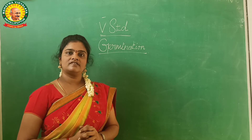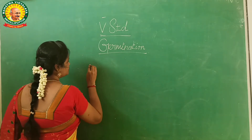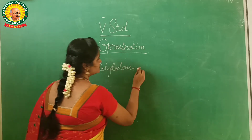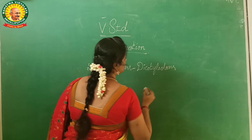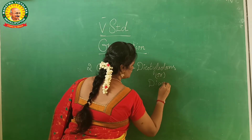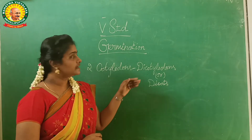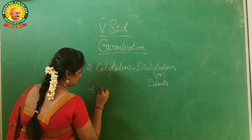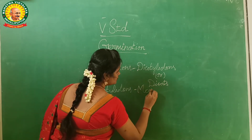We have two things. So if a seed has two cotyledons, what is it called? It is called as dicotyledons. If a seed has two cotyledons, then it is called as dicotyledons. This dicotyledons has another name, we can also call it dicotyledons. If a seed has only one cotyledon, then it is called as monocotyledons.